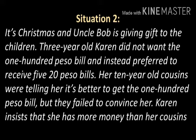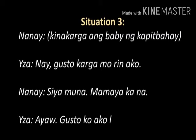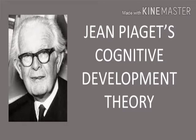Situation number 2: It's Christmas and Uncle Bob is giving gifts to children. Three-year-old Karen did not want a 100 peso bill and instead preferred to receive 5 twenty-peso bills. Her 10-year-old cousins were telling her it's better to get the 100 peso bill, but they failed to convince her. Karen insists she has more money. Situation number 3: Still a conversation between a child and her mother — the child says the baby of the kapitan is being carried. These situations have something to do with how children understand their own experiences.